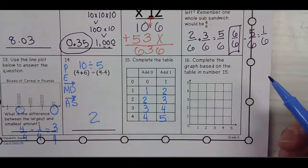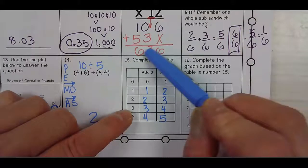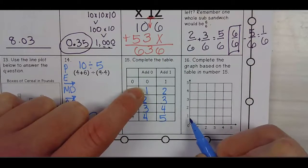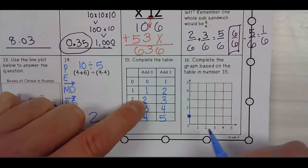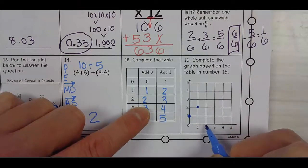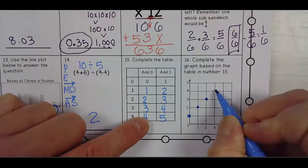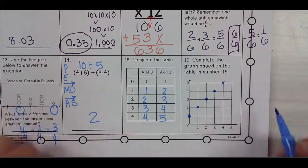Now when we're completing the graph based on the table and number 15, it means using this table. So I go over 0, up 1. I go over 1, up 2. Over 2, up 3. Over 3, up 4. Over 4, up 5. Raise your hand if you have any questions with that.